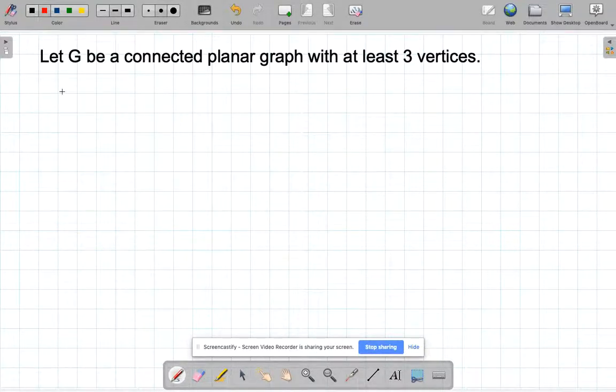In this video, we're going to look at a couple of spin-offs from Euler's theorem. So Euler's theorem said the number of vertices take away the number of edges plus the number of faces equals 2.